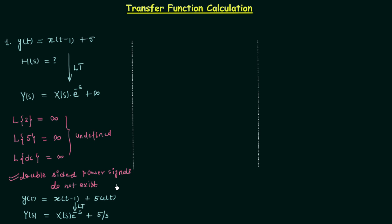Now, can you calculate the transfer function? The transfer function H(s) is equal to the Laplace transform of the output over the Laplace transform of the input. Can you separate X(s) from the right-hand side of this equation? You cannot. Even if you divide Y(s) by X(s), you will have Y(s)/X(s) = e^(−s) + 5/X(s), so X(s) is not separated. Therefore the transfer function calculation is not possible, because the system is a non-LTI system. The transfer function and impulse response are only used for LTI systems.